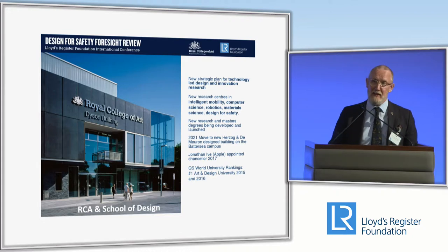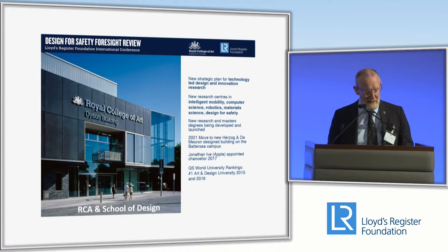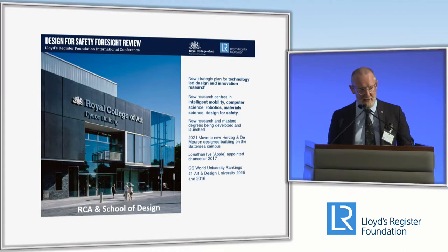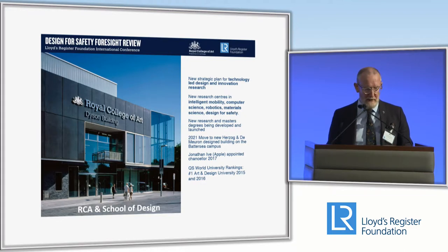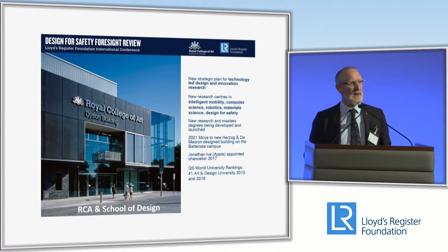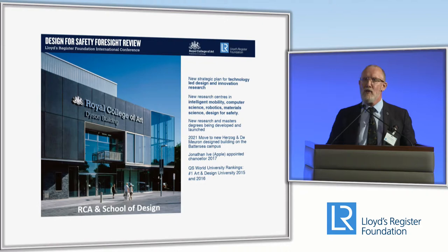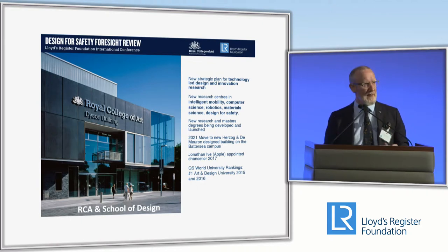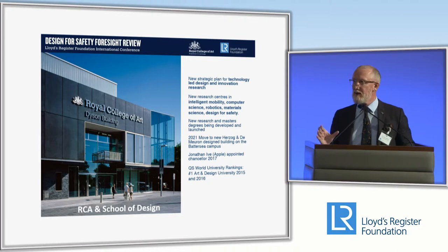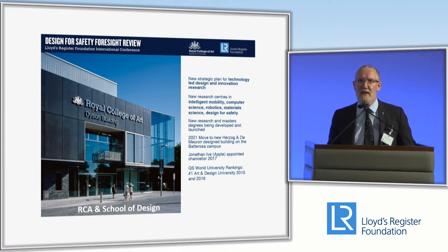Understanding everyone's attitude to risk is different — it differs at an individual level, depending on whether you're in the workplace or at home, working in a team, or across a whole organisation. The RCA is currently building a new campus at Battersea South in London, and for the first time will be building new research centres looking at intelligent mobility and autonomous vehicles, computing science, soft robotics, new material science, and of course design for safety. The designers we're producing today really need to account for all of that — we need to produce different types of thinkers: multidisciplinary thinkers.